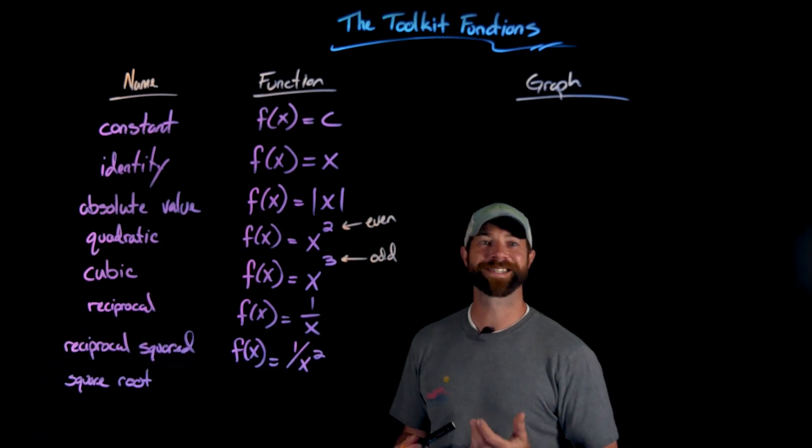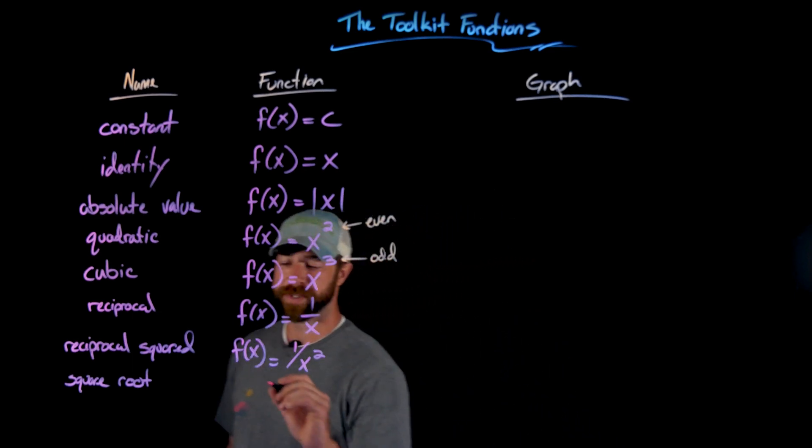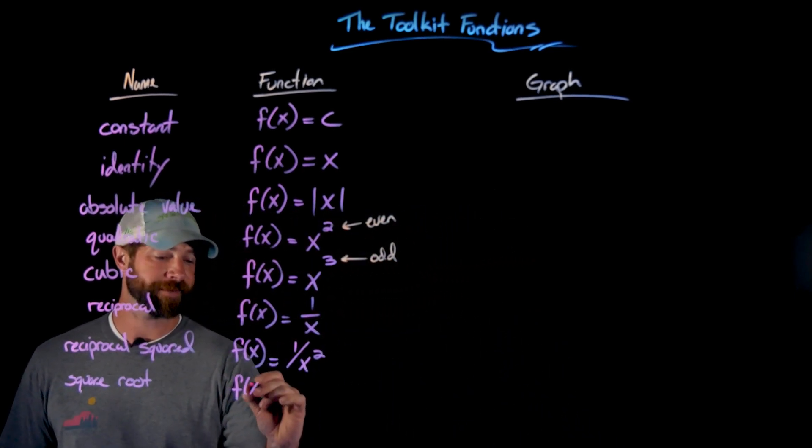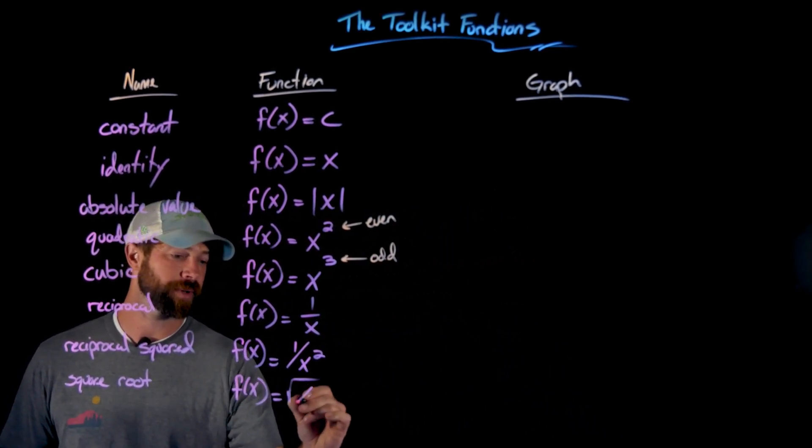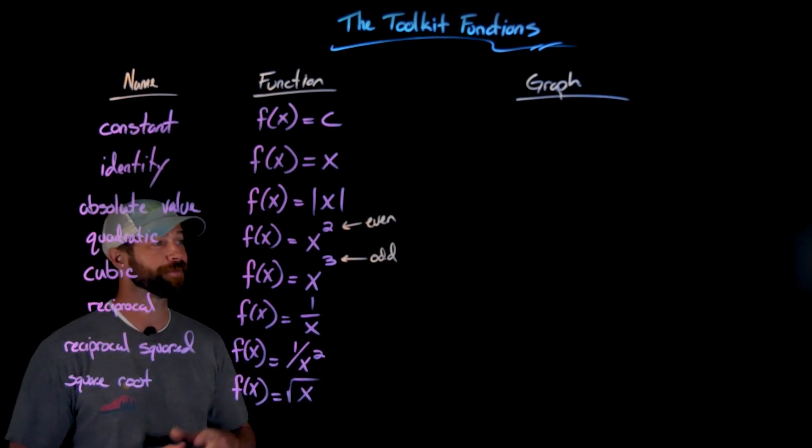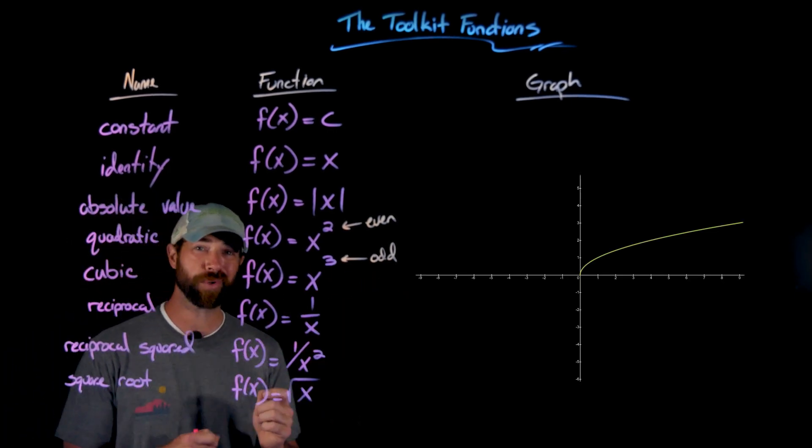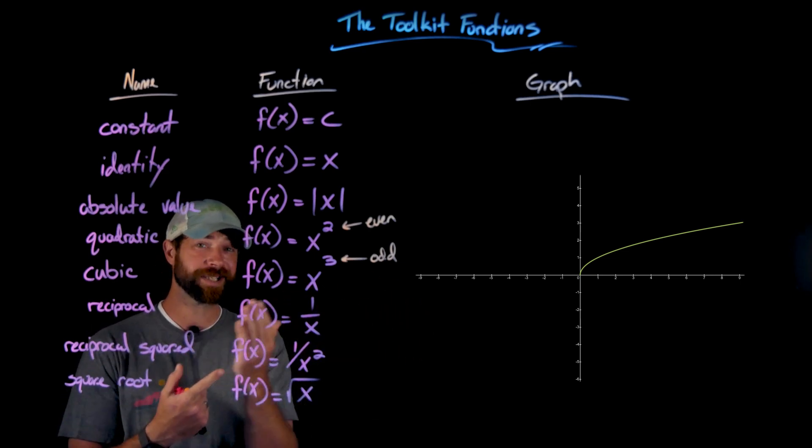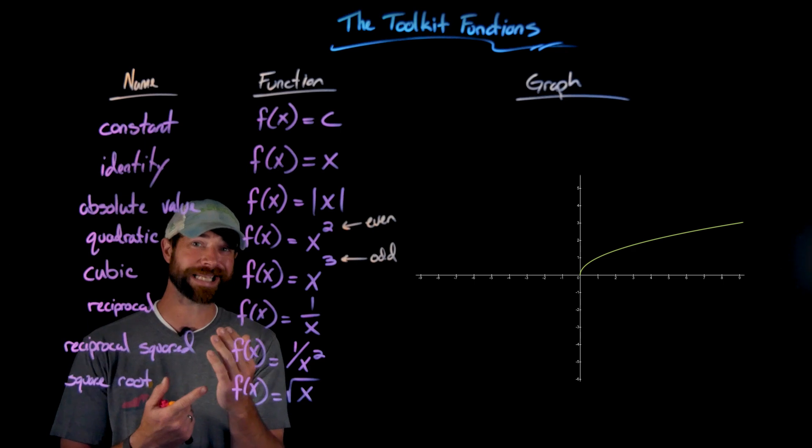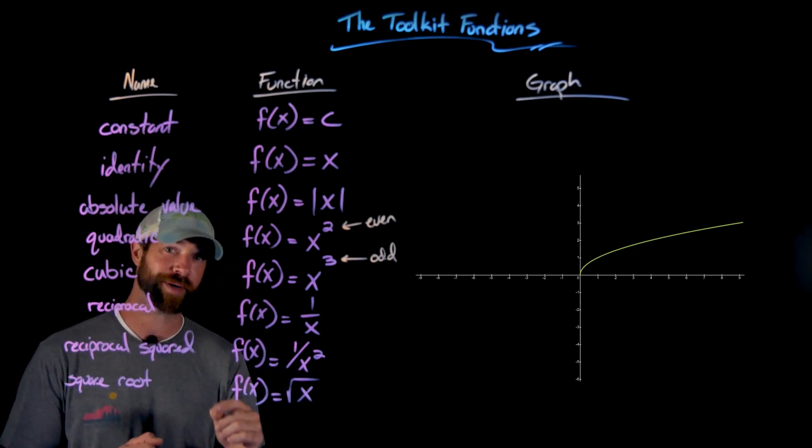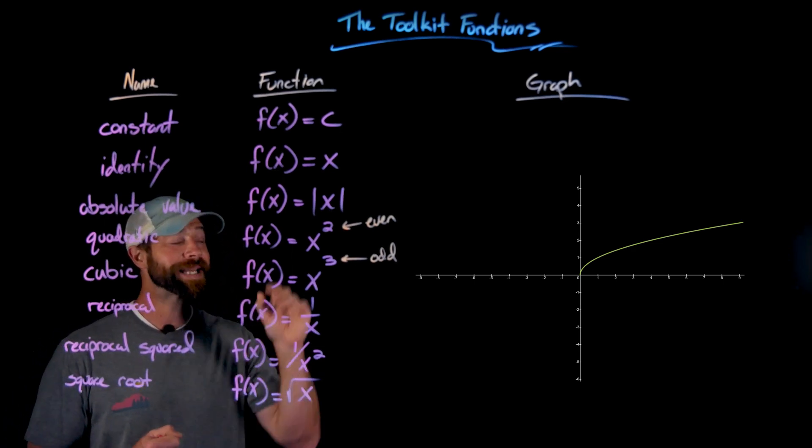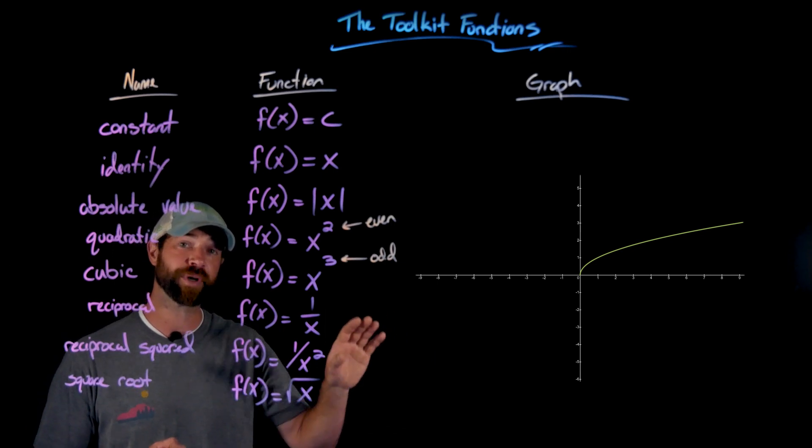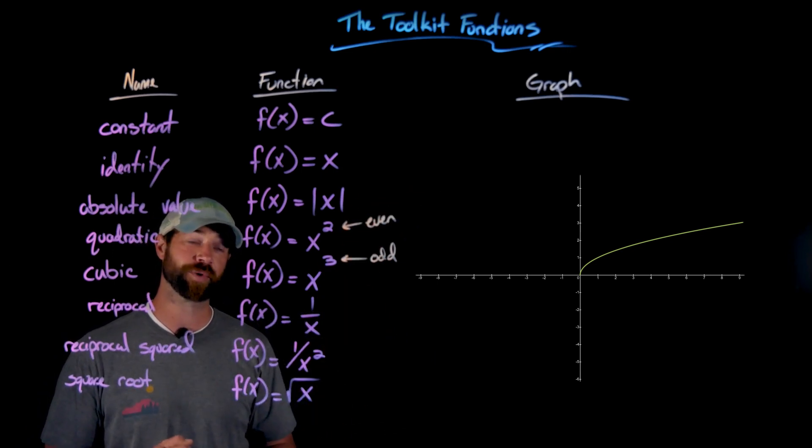Our next function is the square root function. The square root function is f(x) equals the square root of x. Here's the graphical representation of the square root function. Importantly, this graph does not continue to the negative part of the x-axis because we can't take the square root of a negative. And it never outputs a negative number—it's strictly up there in the first quadrant.